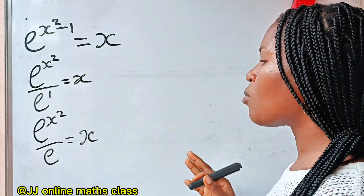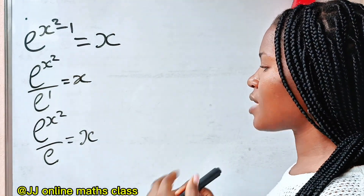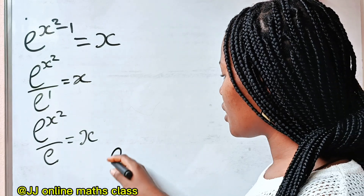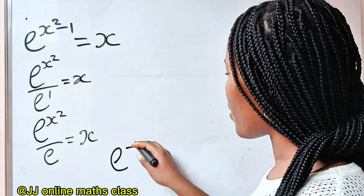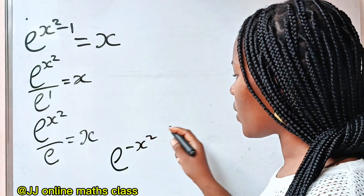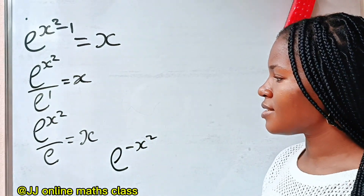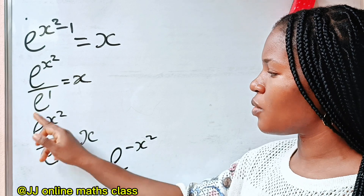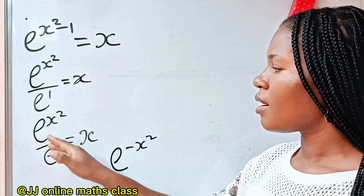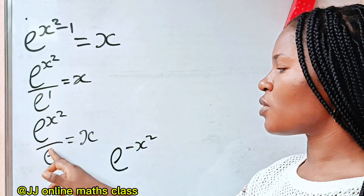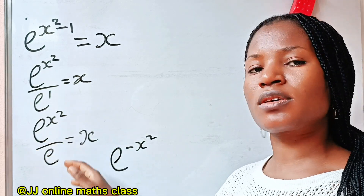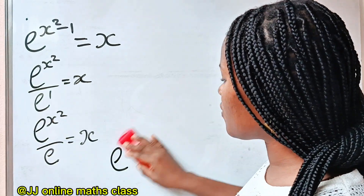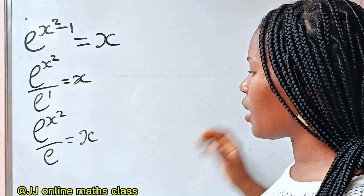Now let us multiply both sides of this equation by e to the power of minus x squared. The essence is I want this to subtract this so that I will have 0 here. e to the power of 0 is 1, and I'm going to have 1 over e. That simplifies this further.